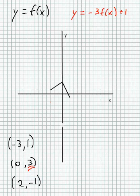Then it's going to go up by 1 because of the shift. Then we have (2, -1). The point (2, -1) will become (2, 3) because of the reflection and the expansion. Then it will go up by 1 unit because of the shift.